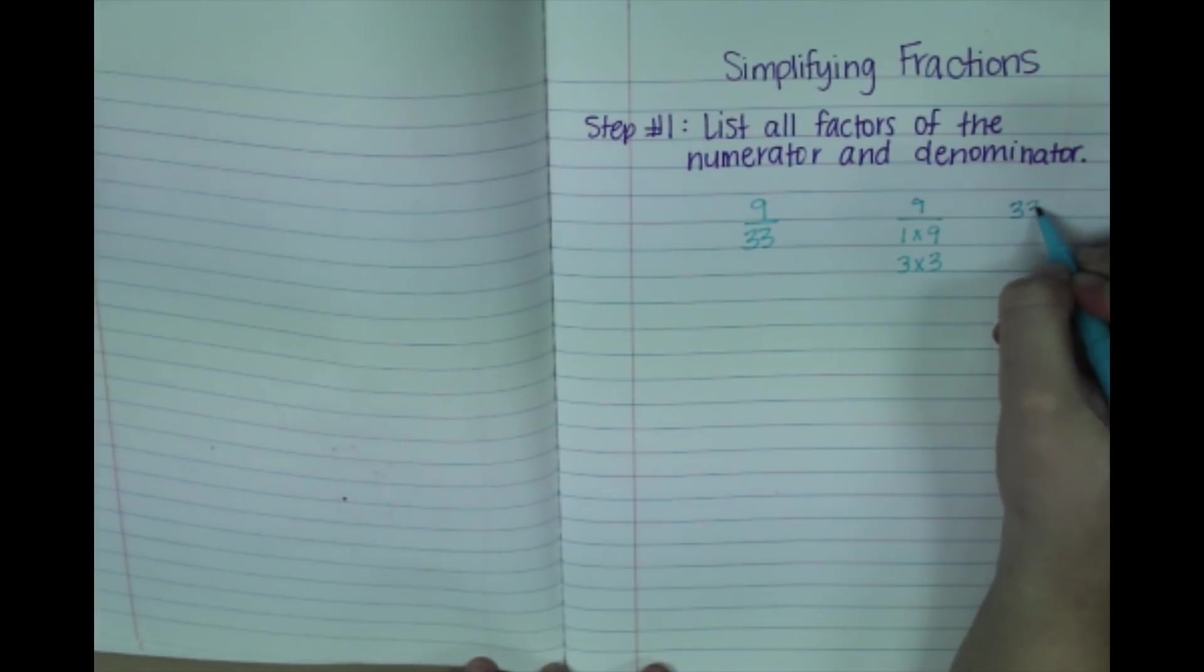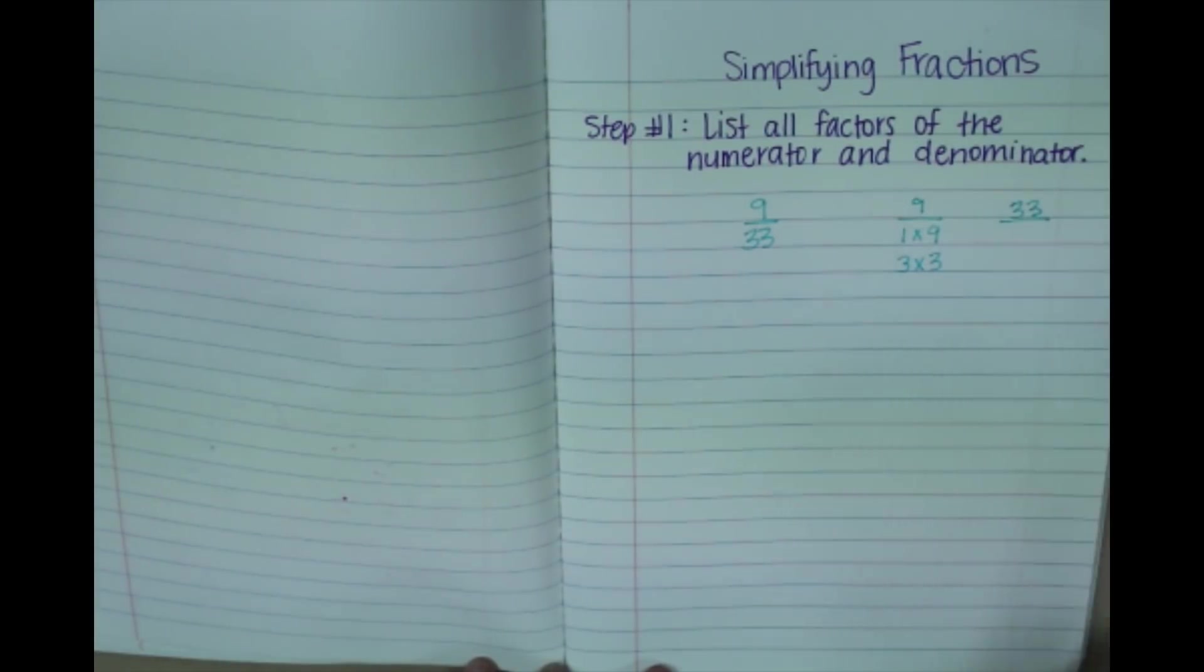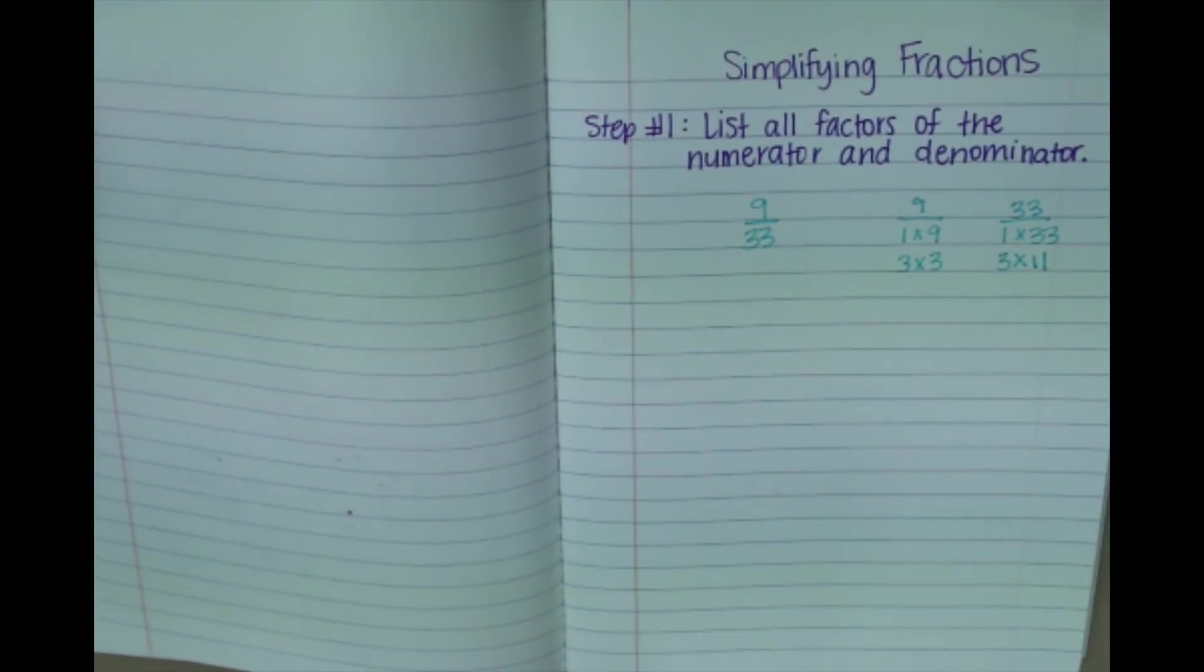My factors of 33 would be 1 times 33, and 3 times 11. And I can't think of any more so I'm just going to leave it there. All right, so that's step number one, is to list all the factors.